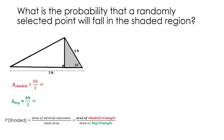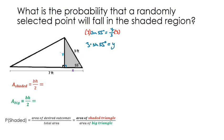For both triangles it's base times height divided by 2, but they have different bases. The base of the shaded triangle is smaller; the base of the big triangle is the full 7. They appear to share the same height. Since there's a right angle here, we're dealing with a right triangle. Using trig: the sine of 55 degrees equals opposite over hypotenuse. Multiplying both sides by 3, we get y = 3·sin(55°) ≈ 2.46. Make sure your calculator is in degrees.